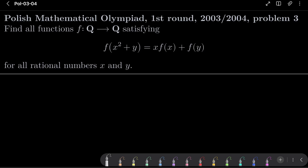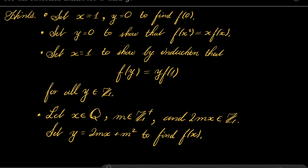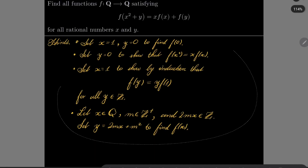It's a very nice problem, a very nice functional equation, and here are my hints. First, set x to be 1 and y to be 0 to find f of 0. Then set just y to be 0 to show that f of x squared must equal x times f of x. Then set x to be 1 and show by induction that f of y equals y times f of 1 for all integers y. And finally, let x be any rational number and let m be a positive integer such that 2mx is an integer — you can choose m to be the denominator of x — and set y to be 2mx plus m squared to find f of x. So give this problem a try and I will see you in just a minute.